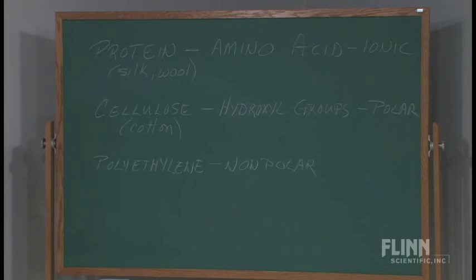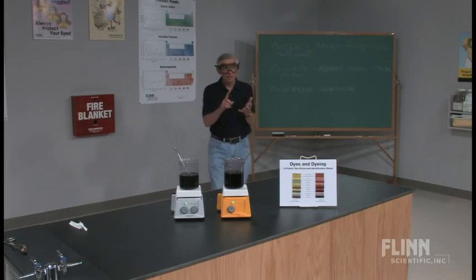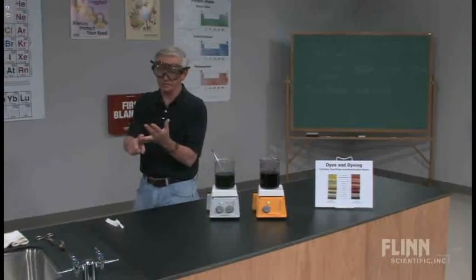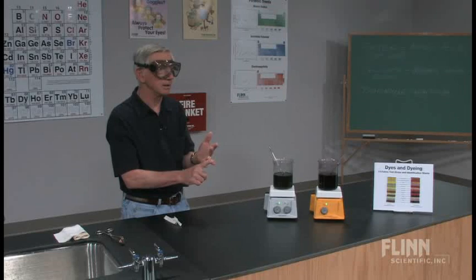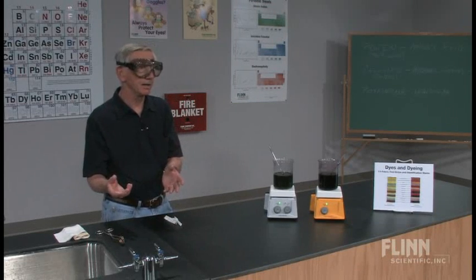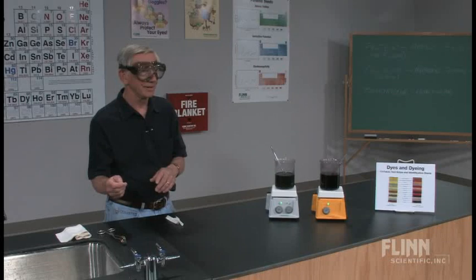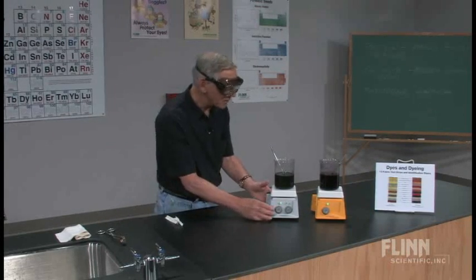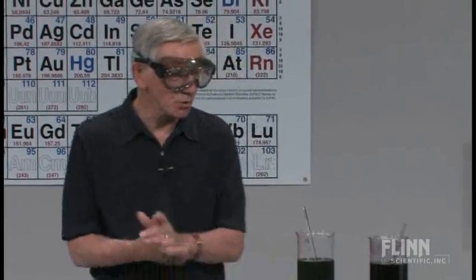One of the things you can do is use indicators: malachite green, Congo red. Congo red is a really good one because if you dye something with Congo red and let it dry, and you rinse it with vinegar, it changes color. Methyl orange is also good to work with.